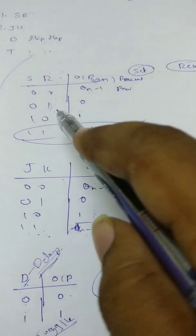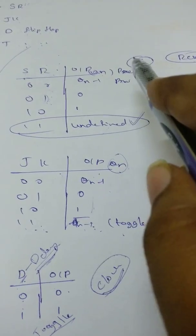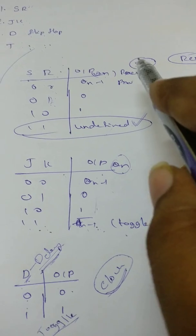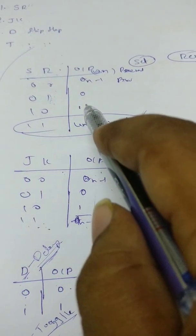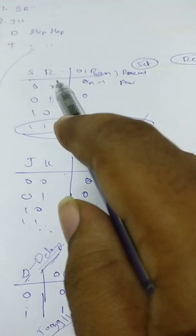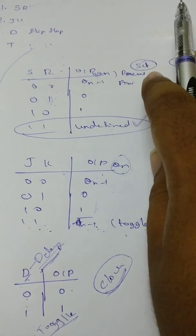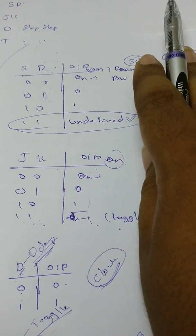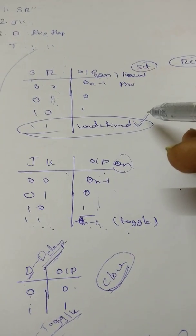Next, in third state, we are pressing S, means set button. So whatever the previous state may be, if you press the set button, the output will become 1. And in fourth case, we have both one for S and R. Means you are pressing set and reset button simultaneously. So we can't define this output, it is defined as undefined.